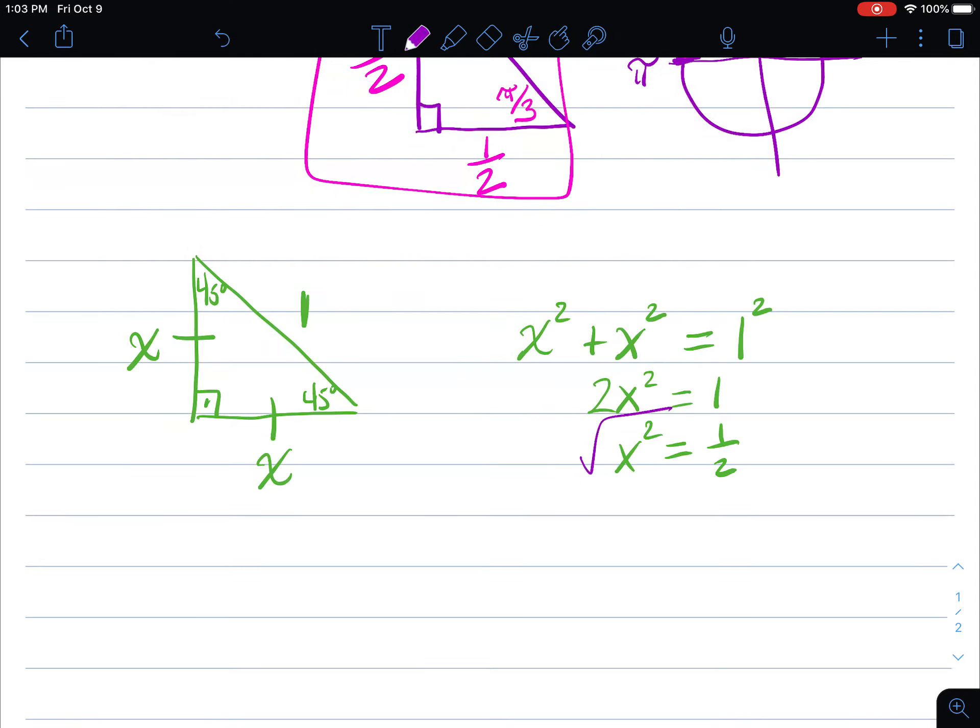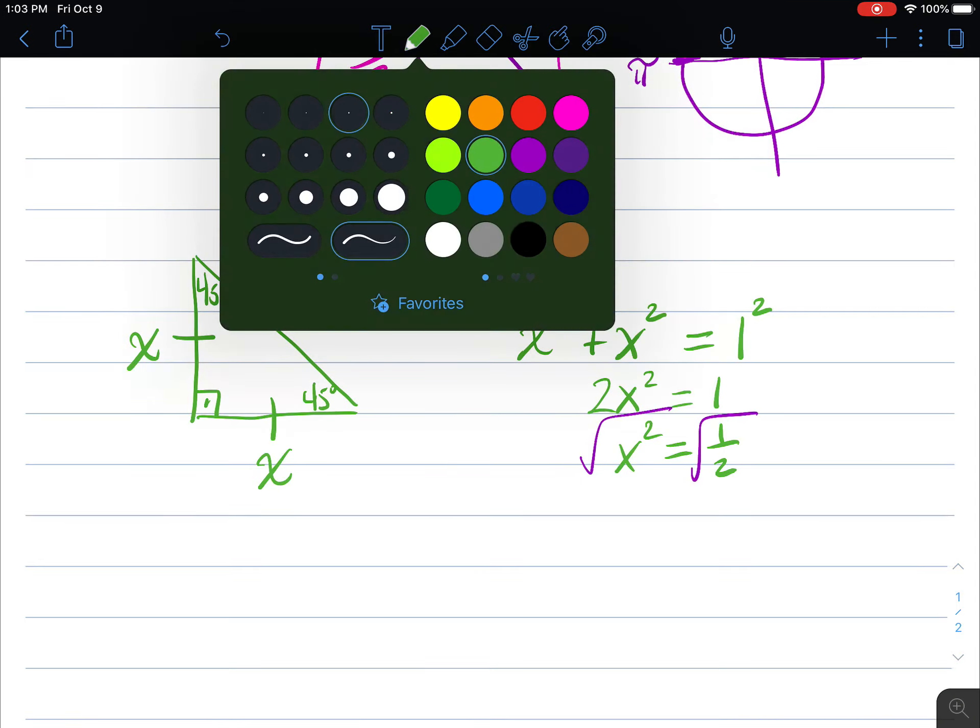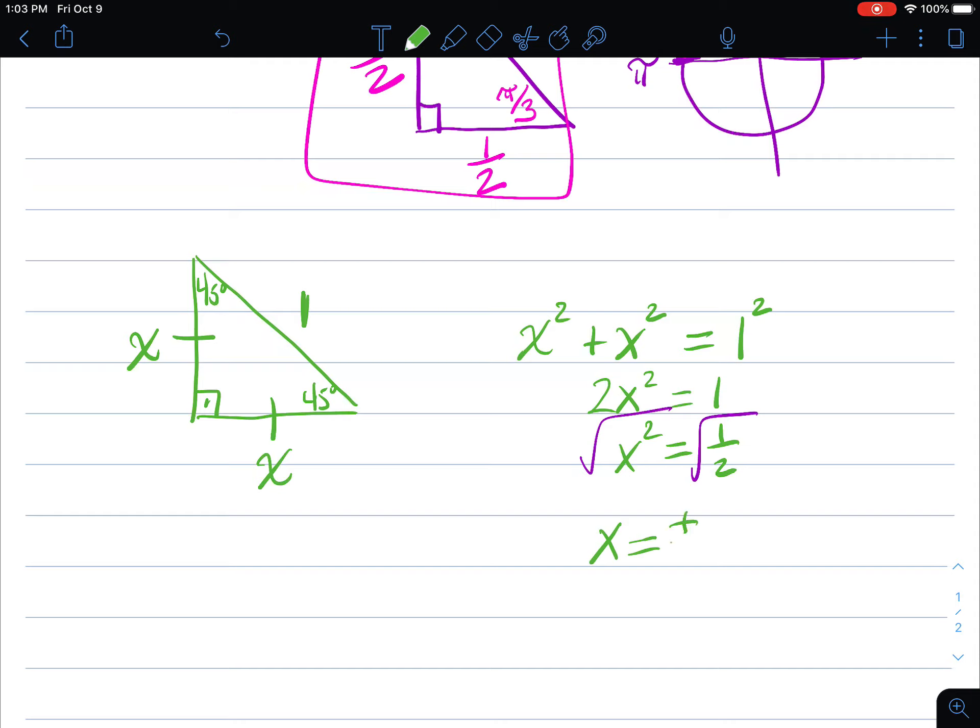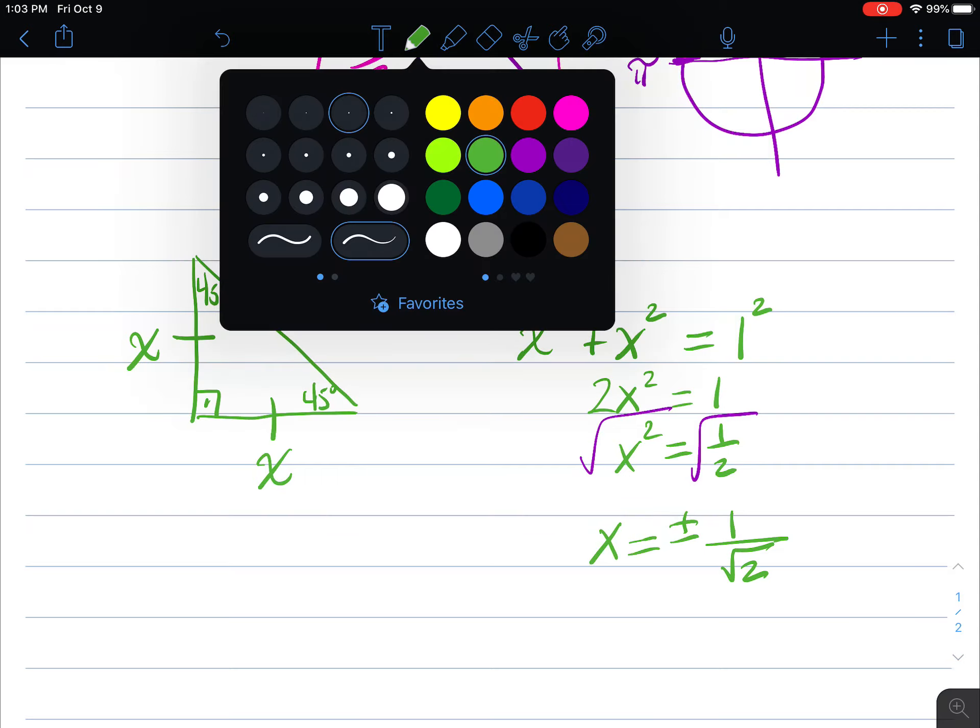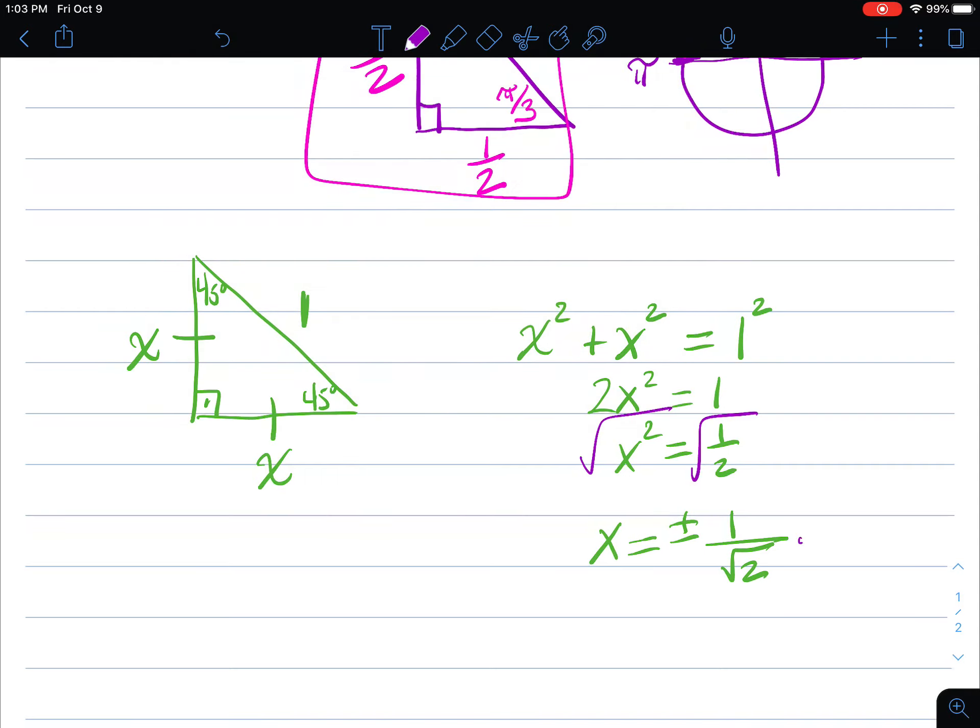And then we're going to of course take the square root of both sides to get x alone. x equals plus or minus 1 over the square root of 2, because of course the square root of 1 is just 1. Now we can't leave it like this, we actually need to rationalize that denominator in order to keep it fully simplified. So I'm going to multiply by what is really just 1.